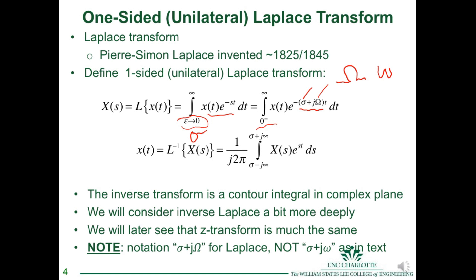In this course, we follow the convention that analog frequencies are denoted by capital Omega and discrete time frequencies by lowercase omega — consistent with most digital signal processing textbooks. Since we have both analog and digital components in every loop, it's important to have a consistent convention. Capital Omega is reserved for our Laplace variable, so s equals sigma plus j capital Omega, not lowercase.